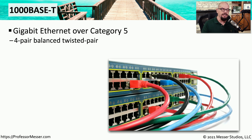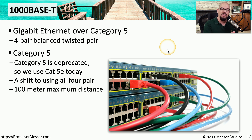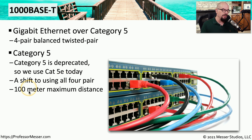We then introduced 1000BASE-T, known as Gigabit Ethernet, over category 5 cabling. This uses all four pairs of wires within the cable. Although category 5 is now deprecated, we typically use category 5e in its place. This is very different from 10BASE-T and 100BASE-TX, which used only two pairs — so patch cables made for older standards won't achieve gigabit speeds. The maximum distance for 1000BASE-T is also 100 meters.